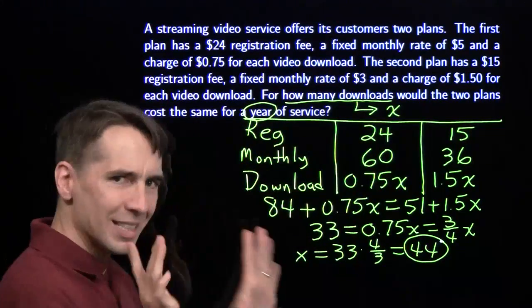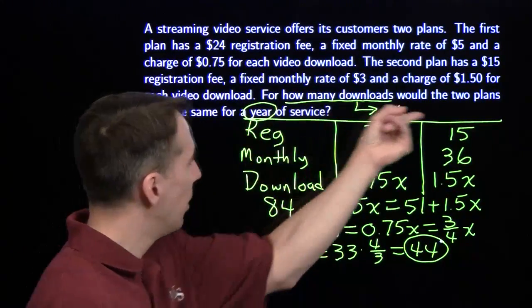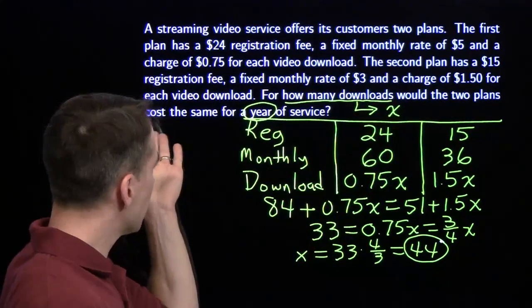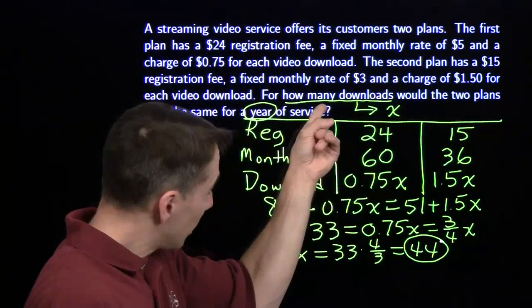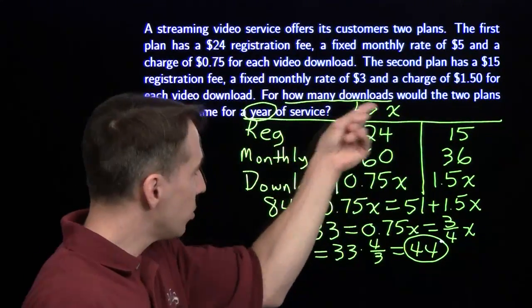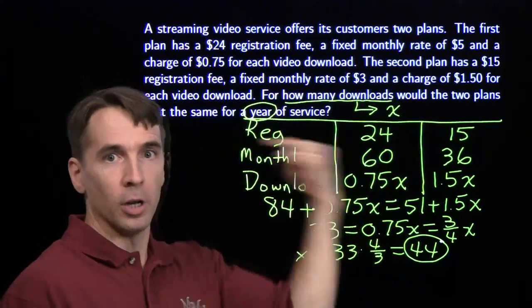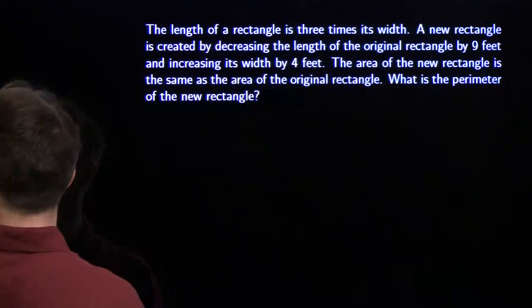Last step — always read the question one more time. For how many downloads would the two plans cost the same for a full year of service? How many downloads? That's x. X is what I found. The answer is 44. On to the next problem.